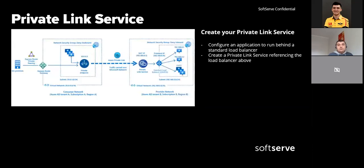Now let's talk more deeply about Private Link service. Azure Private Link service is a reference to our own service powered by Azure Private Link. Our service running behind an Azure Standard Load Balancer can be enabled for private link access so that consumers can access it privately from their own vNets. The consumers can create a private endpoint inside their vNet and map it to the service. Azure Private Link service is only supported on Standard Load Balancer. After creating a private link service, Azure generates a globally unique name called an alias, based on the name we provide.